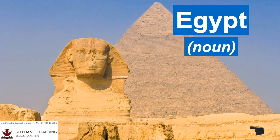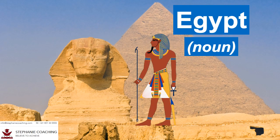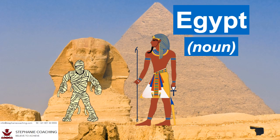Word number one is Egypt. The noun Egypt is a site of an ancient civilization ruled by a pharaoh. It is centered on the Nile River in northeastern Africa. If you go to Egypt you will see the ancient pyramids and mummies. Don't forget the letter Y in Egypt.